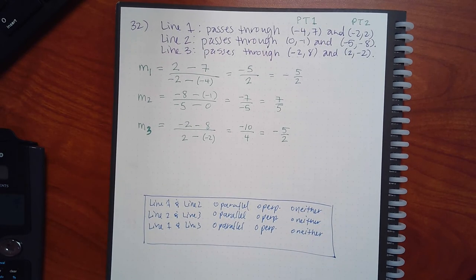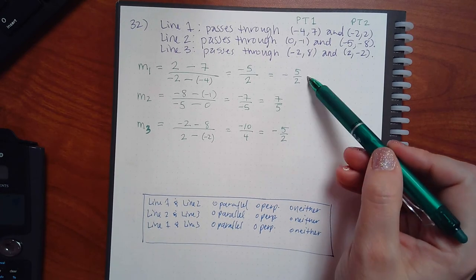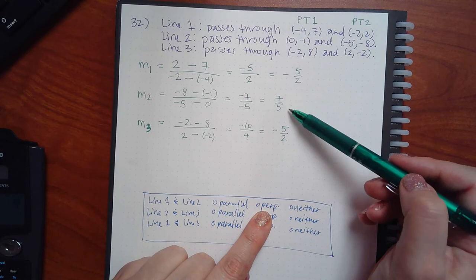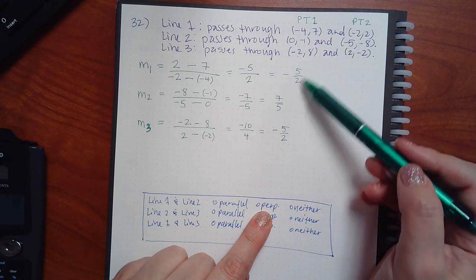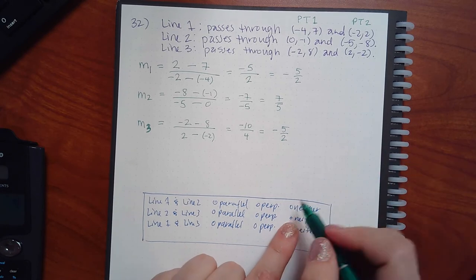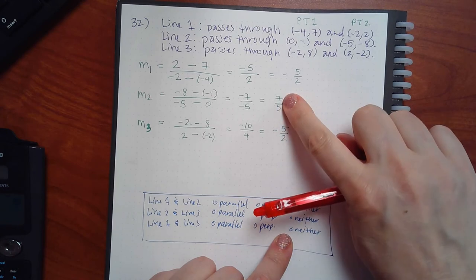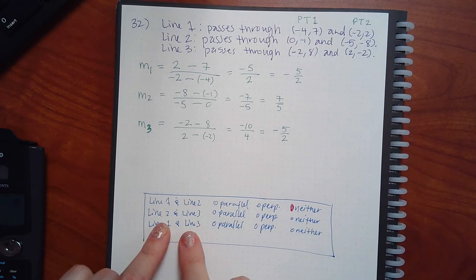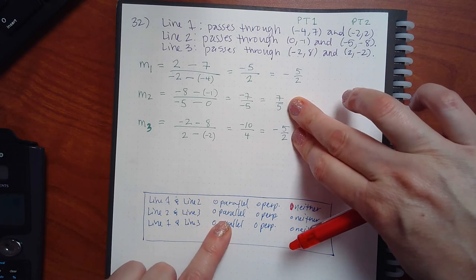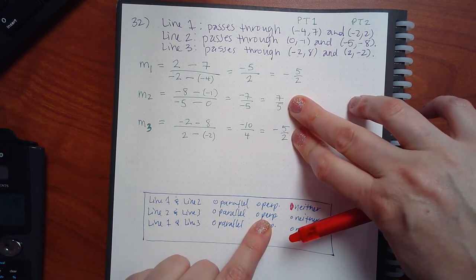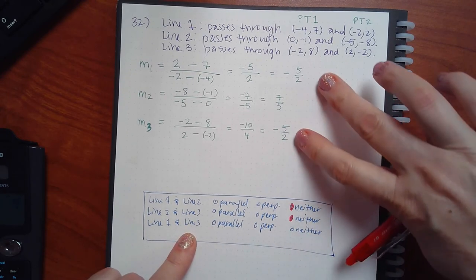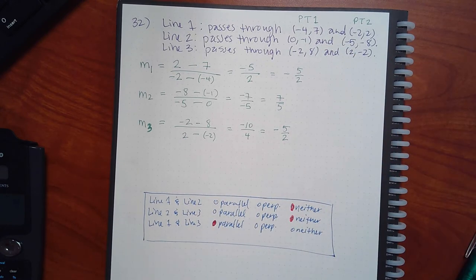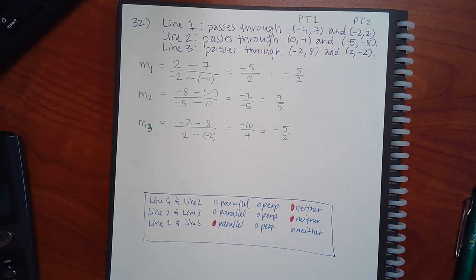Now let's compare. Lines one and two: not the same, and not perpendicular — they're opposite signs but not reciprocals. So they're neither. Lines two and three: not the same, not perpendicular — you'd need one-fourth there. So neither. Lines one and three: those are exactly the same, sign and all — so they're parallel. You just have to work for the slopes on this one before you compare.